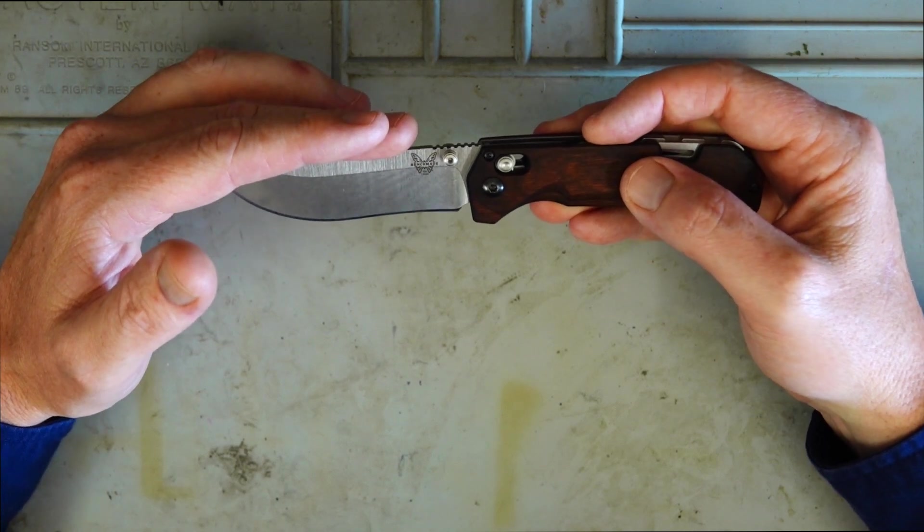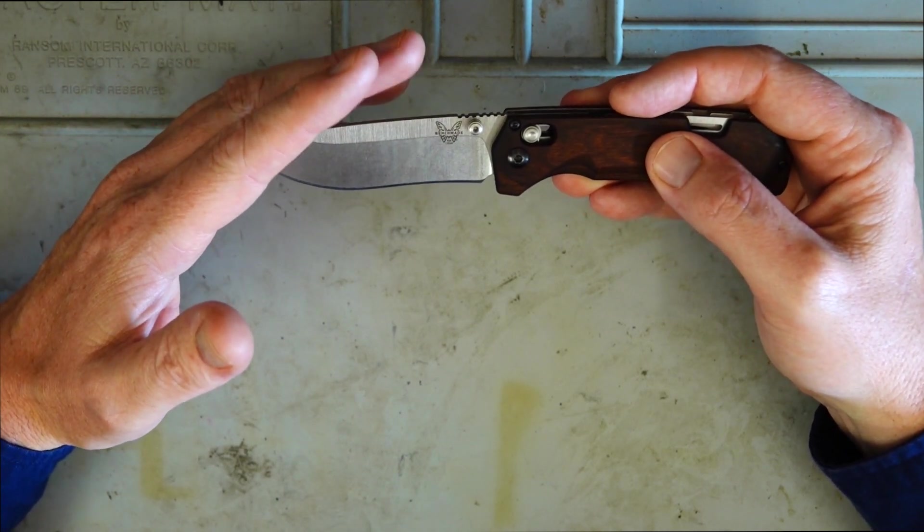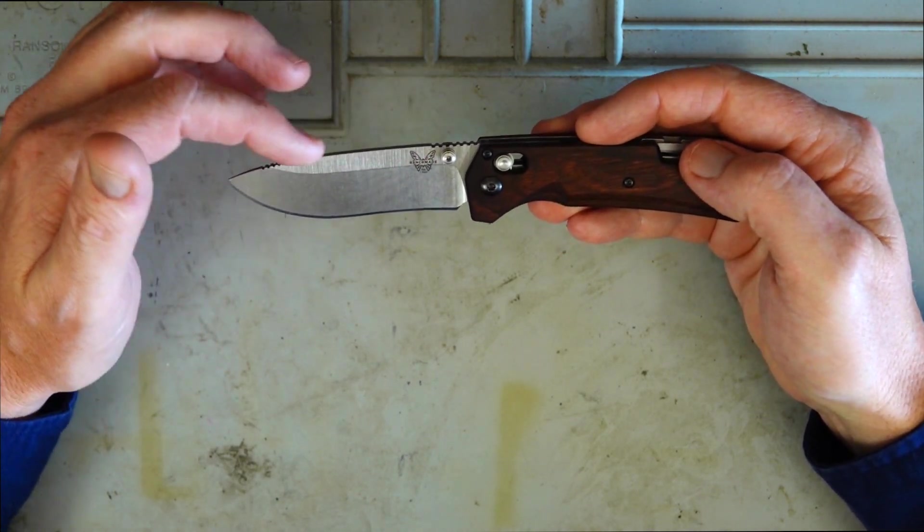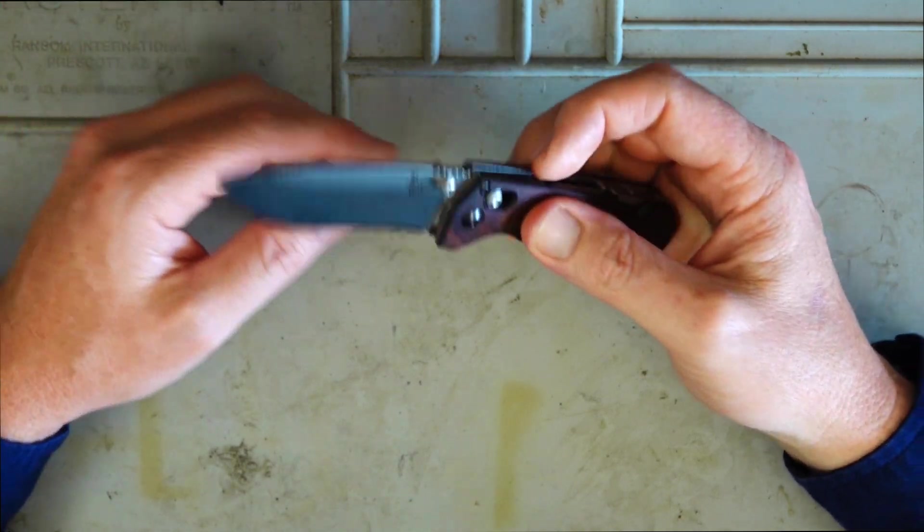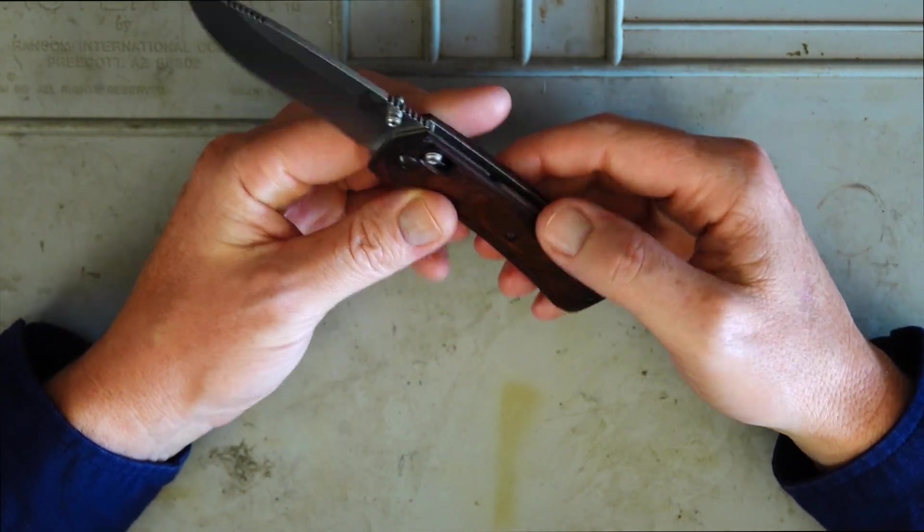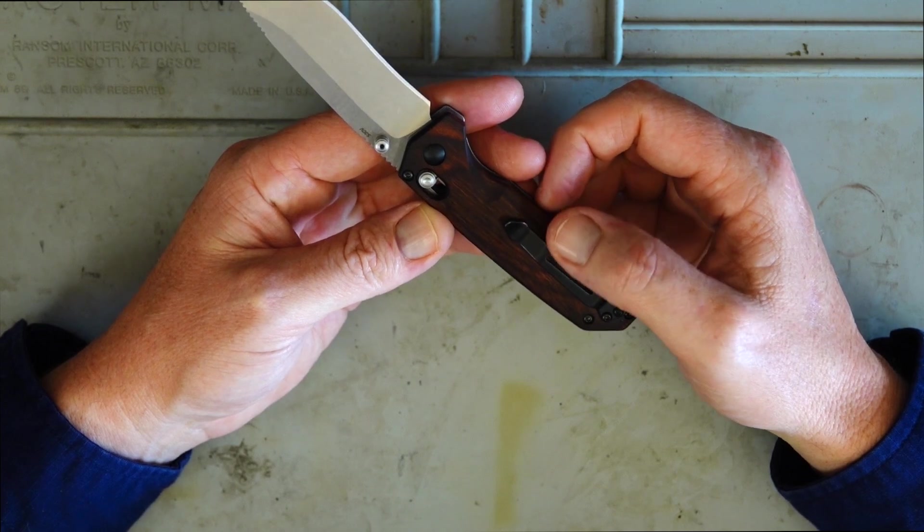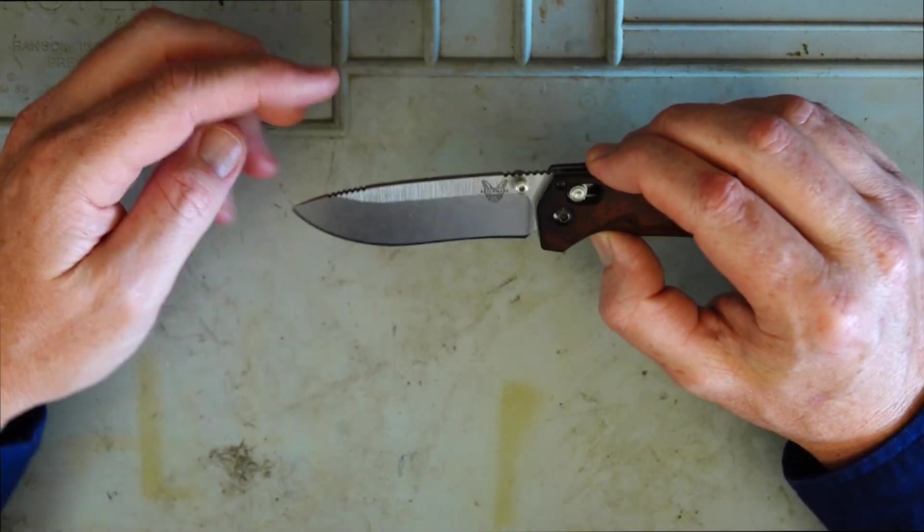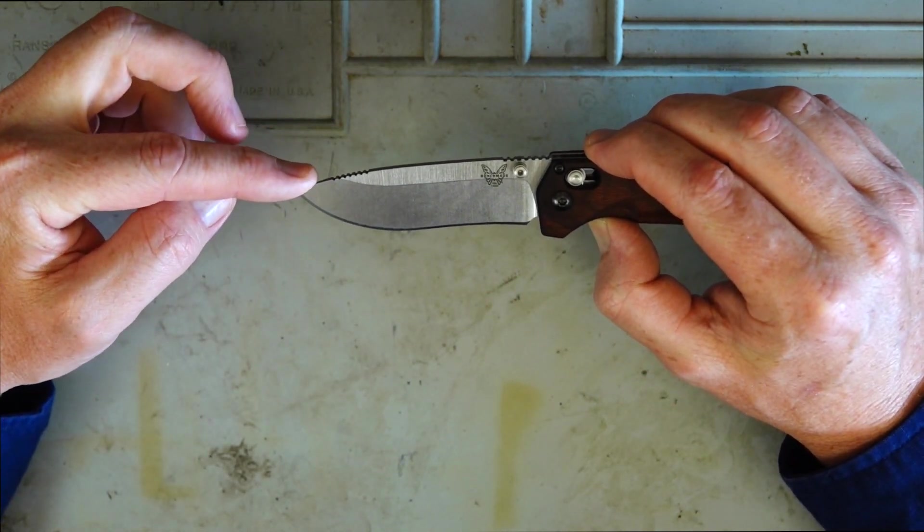Now the blade on this is 3.5 inches or 8.9 cm in length. The overall weight of the knife is 4.76 ounces or 135 grams. So it's a solid little knife. We've got the drop point at the front of the blade here.